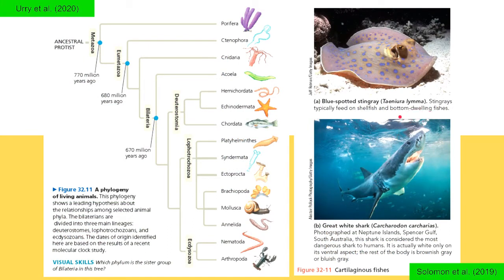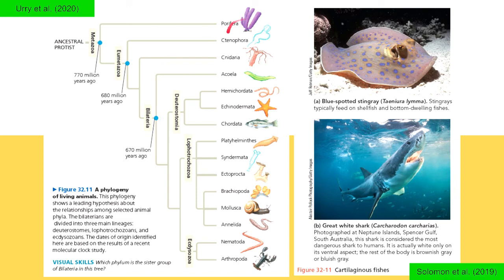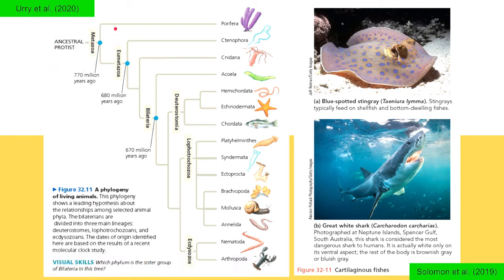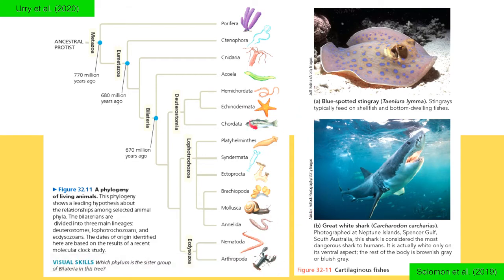More images of animals: blue spotted stingrays, then the great white shark Carcharodon carcharias, then Taeniura lymma. These are the different groups of animals, and they all share a common ancestor in the past. That ancestor gave rise to poriferans, cnidarians, echinoderms such as sea stars, and chordata — the group of chordates with backbone, including fish. Then you have invertebrates: platyhelminthes, mollusks, annelids, nematodes, and others. From chordates, you have reptiles, amphibians, birds, and mammals.